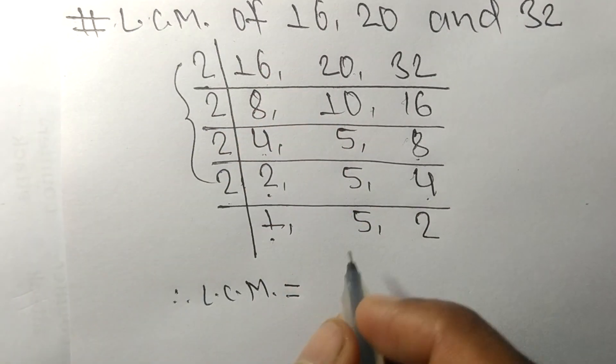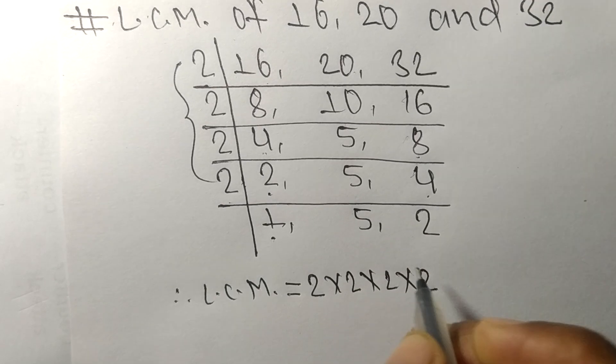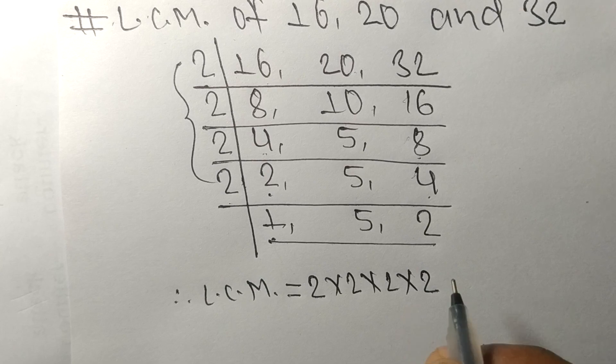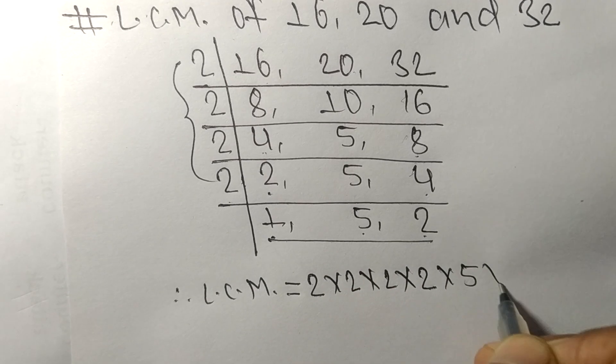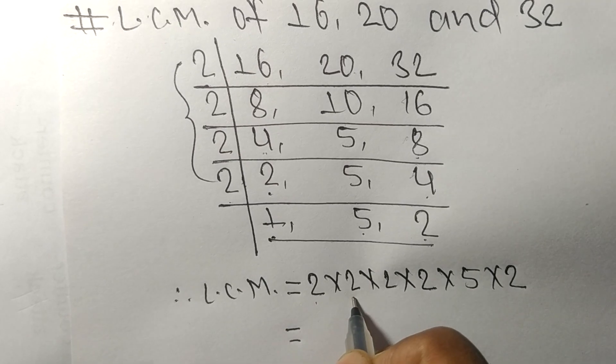From this side it is 2 times 2 times 2 times 2. From this side, we choose the numbers greater than 1, that is 5 and 2.